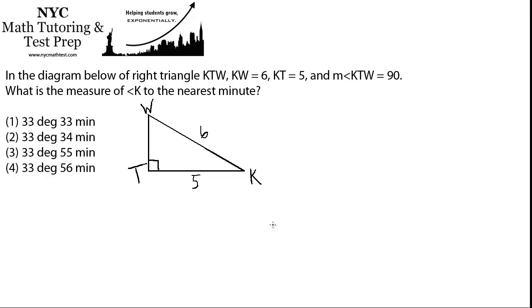In the diagram below of right triangle KTW, KW is 6, KT is 5, and the measure of angle KTW is 90. What is the measure of angle K to the nearest minute?